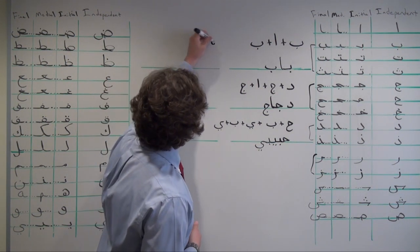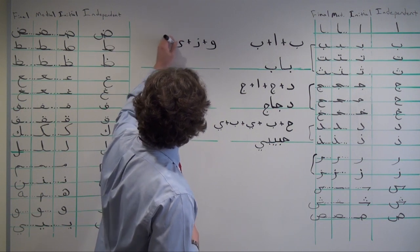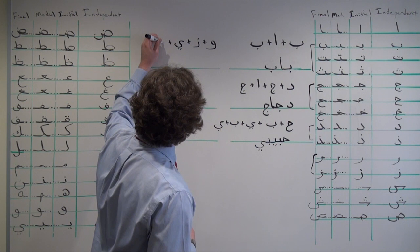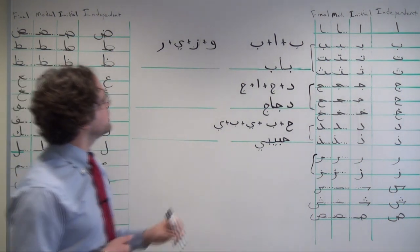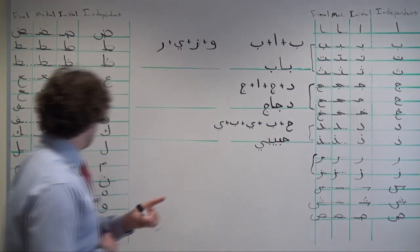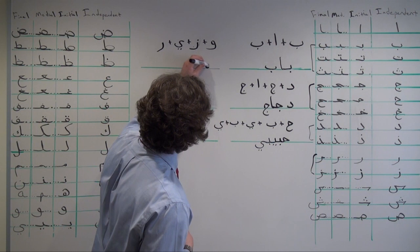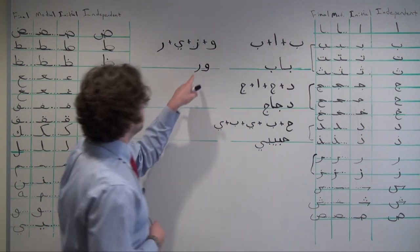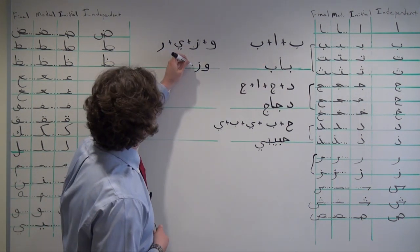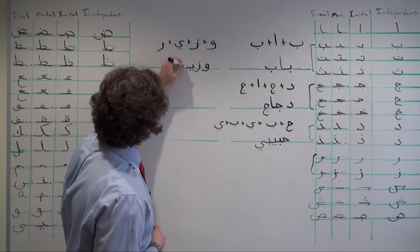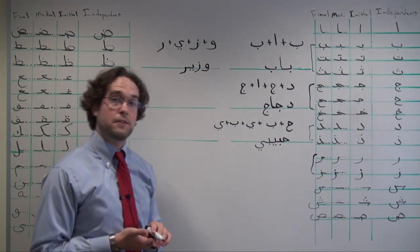Here's another: waw, za, ya, ra. Initial form of waw, which once again is an unfriendly letter, doesn't quite connect with the letters that follow it, so it has a stand-alone form pretty much by itself. waw, za, which as we see here in its medial form also doesn't connect. ya, ra, وزير, which means secretary or minister in the governmental sense.